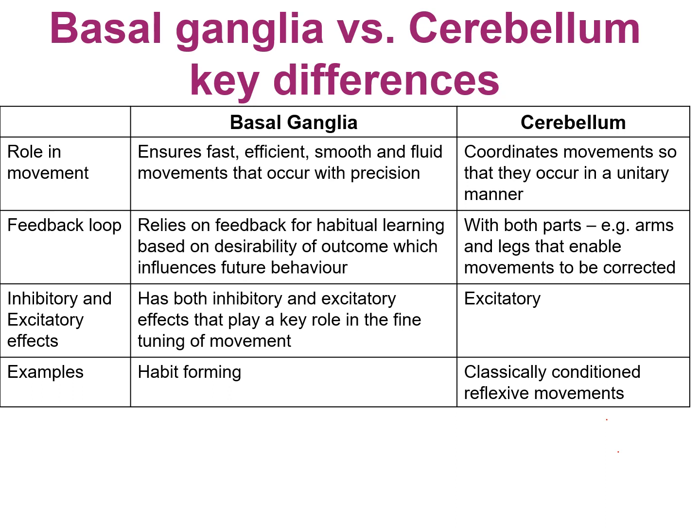The main examples you need to look out for on SACs or VCAA exams: for the basal ganglia, we're looking at fine-tuning of movements, encoding and retrieval of those, and also habit forming and habitual learning. Whereas with the cerebellum, look out for clues particularly with classically conditioned reflexive movements, like an eye blink or something like that.